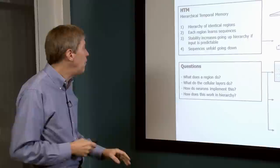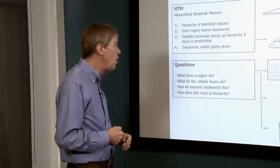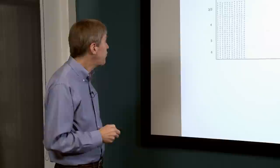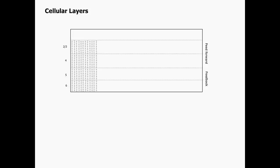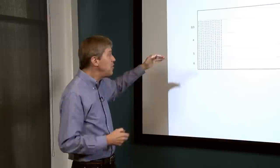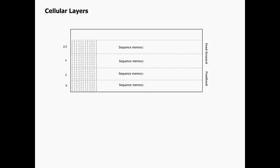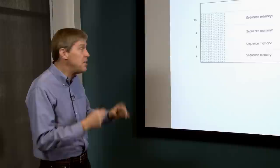HTM theory raises detailed questions: what exactly is each region doing? What are the different layers doing? How does the memory work? Here's a picture of a slice of neocortex with four layers — 2, 3, 4, 5, and 6. Layers 2, 3, and 4 are essentially feed-forward layers with information going up the hierarchy; layers 5 and 6 have information flowing down. Each layer is implementing a type of sequence memory — the same basic idea repeated in different areas to do different things. This is a very interesting idea: a common algorithm running throughout.